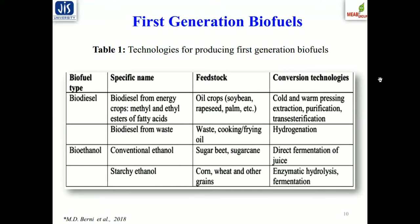The most typical first generation biofuel types are biodiesel and bioethanol. Biodiesel is derived from energy crops like methyl or ethyl esters of fatty acids, and can also be generated from combustion of waste. Feedstocks competing with the food chain include oil crops such as soybean, rapeseed, palm seeds, and even cooking and frying waste oil, which can be used for generation of methyl or ethyl ester precursors of biodiesel. Conversion technologies include cold and warm processing extraction, purification, transesterification, and hydrogenation reactions as downstream processing units to clarify and purify the biodiesel.